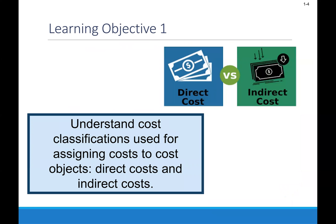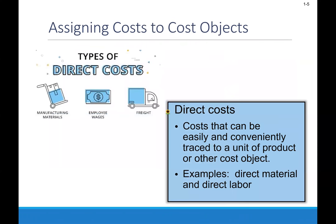The first one is looking at cost classifications, focusing on what we will call direct costs and indirect costs. Direct costs are really easily traced to a unit of product or other cost object, such as direct materials and direct labor. Those employees that are working directly on the factory line have direct costs associated with a product, and that direct material that goes into the production of that product would be direct materials.